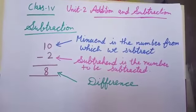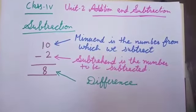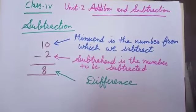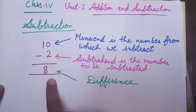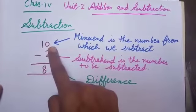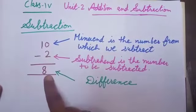But before starting the topic, I want to clear about the terms minuend, subtrahend and the difference. Let us take an example. 10 minus 2 is equal to 8. Here 10 is called minuend, 2 is called subtrahend and 8 is called difference.